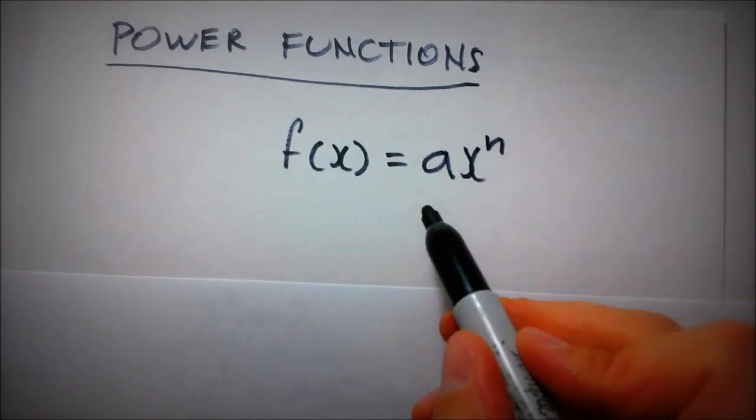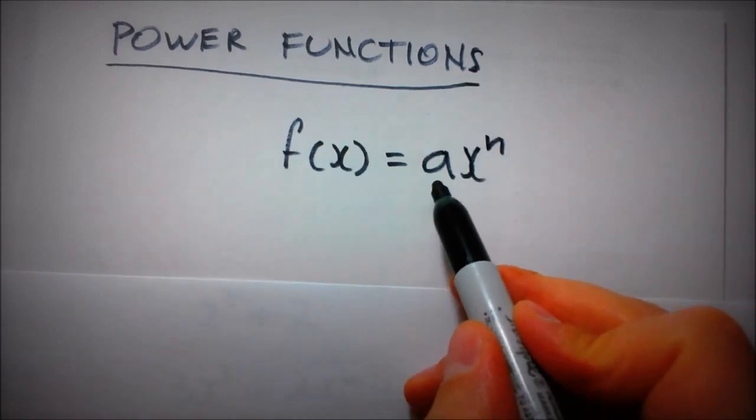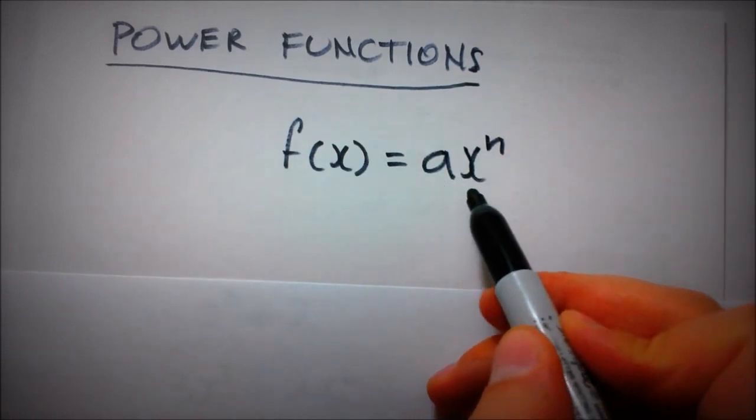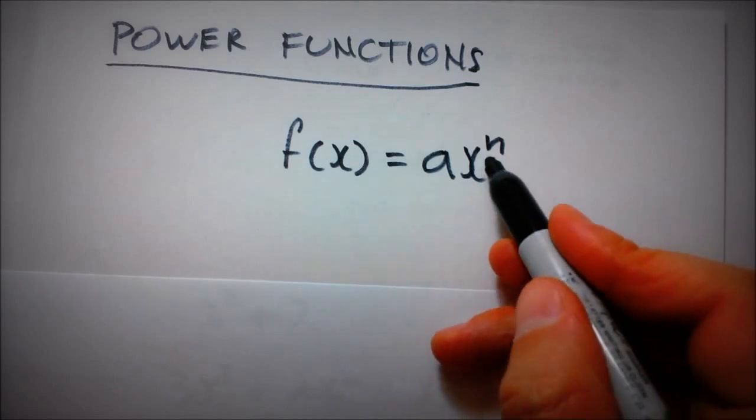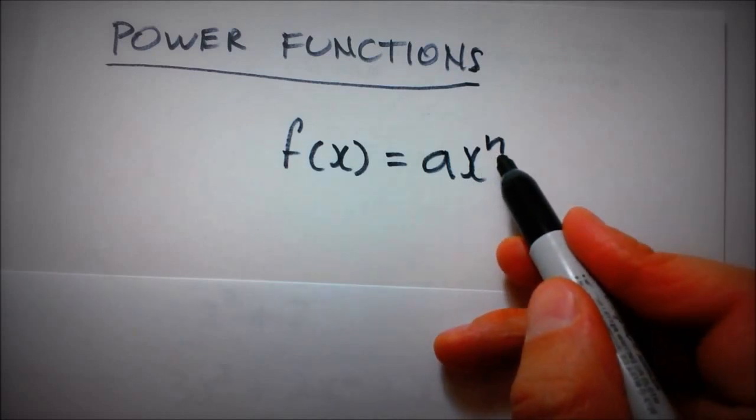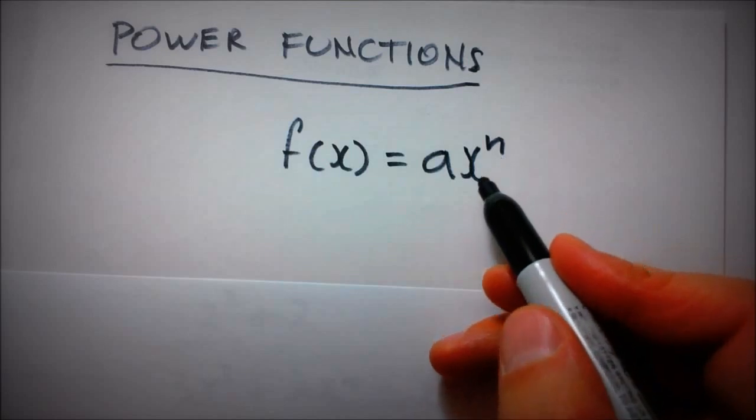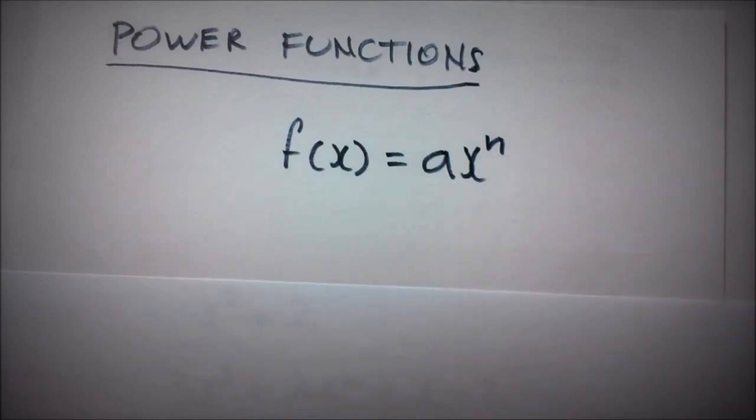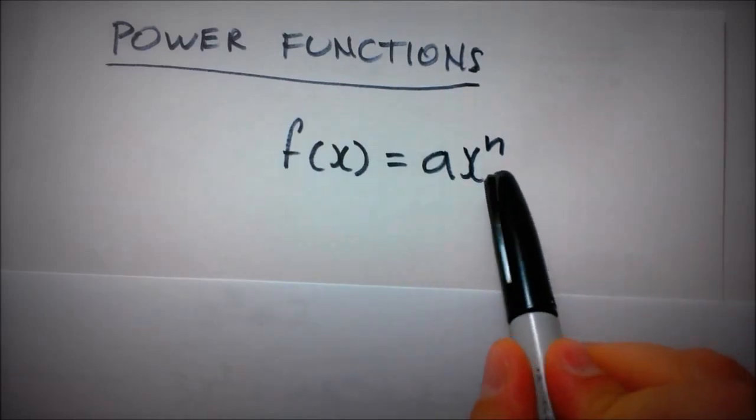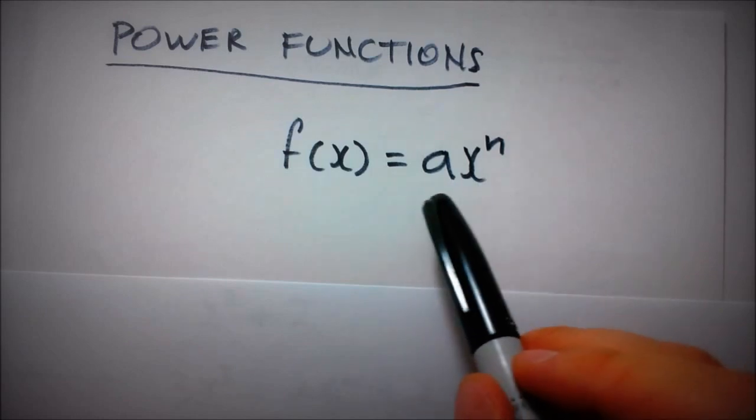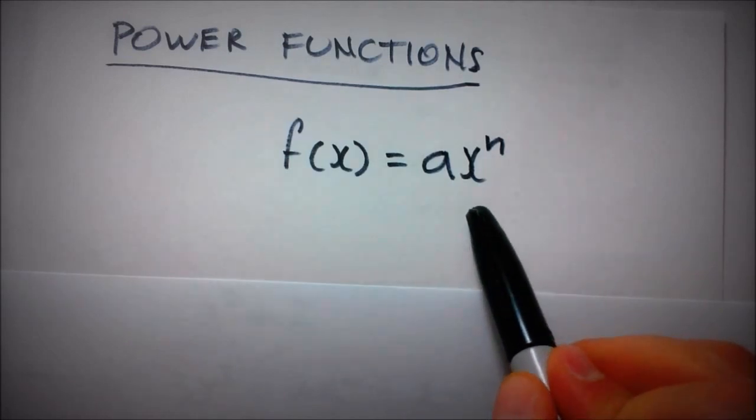This means that a is any coefficient, any real number, x is a variable, and then n is any whole number. That means n cannot be negative because if it was negative we would be dealing with something completely different. By now we're all familiar with what a power function is.